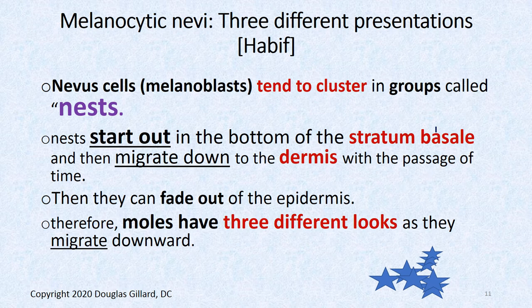Nevus cells tend to cluster in groups called nests. These nests typically grow right down in the stratum basale and the superficial dermis — at the dermal-epidermal junction — and grow all the way up to the top of the skin, showing up as that brown macule you know as a mole. Early nevi tend to be flat, less than six millimeters if they don't have hair. As you get older, they go through different phases.